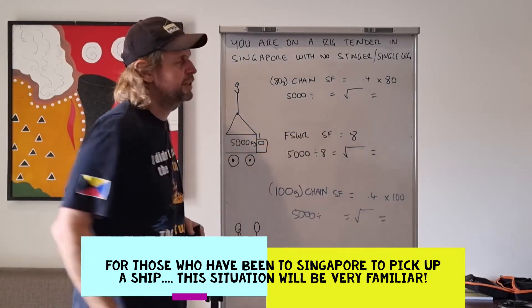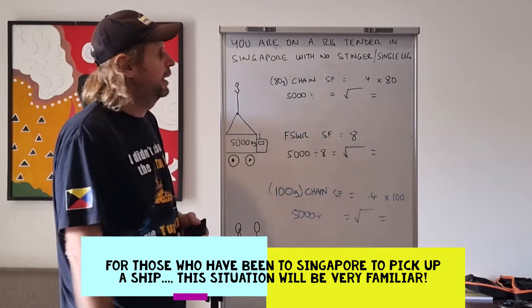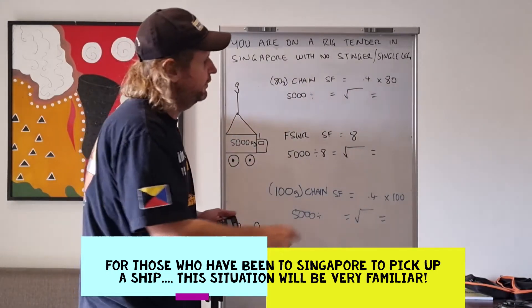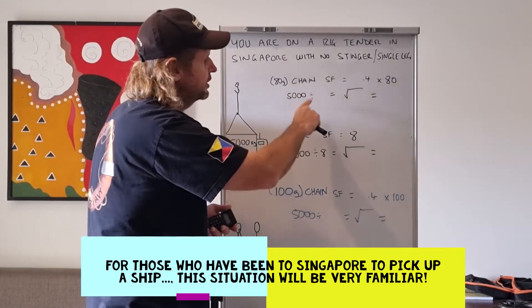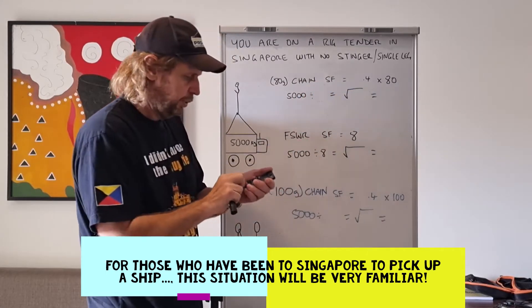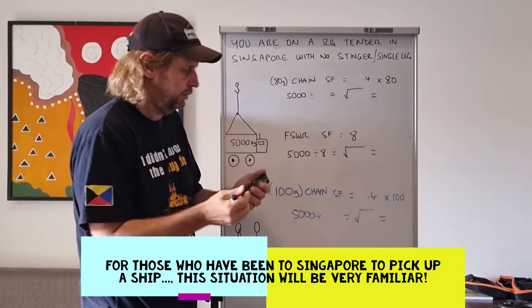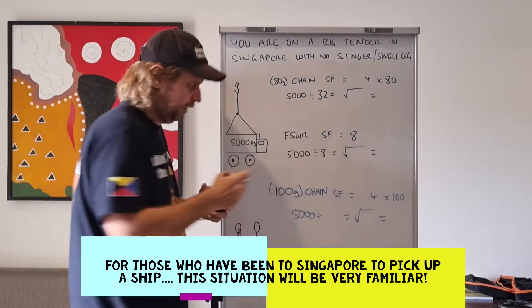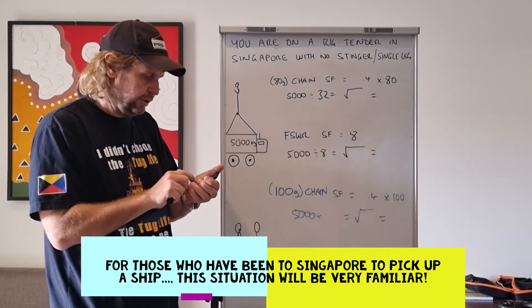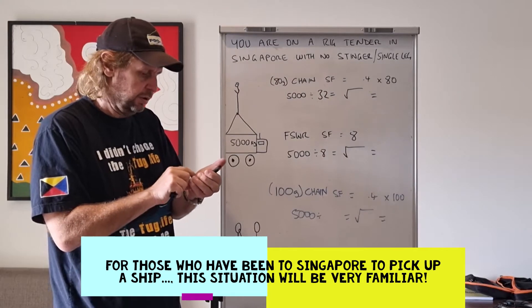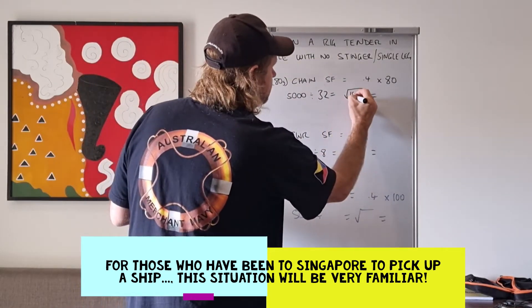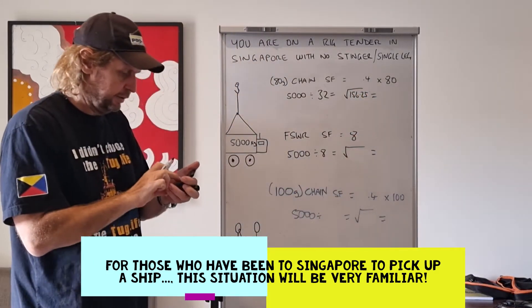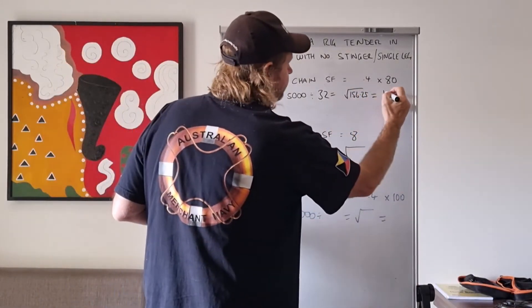The way we work out the safety factor for chain - chain safety factor equals 0.4 times 80 equals 32. So 5,000 kilos divided by 32 equals 156.25, and if we square root that we get 12.5.